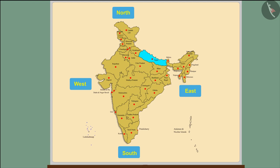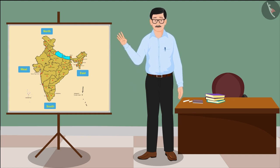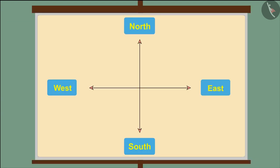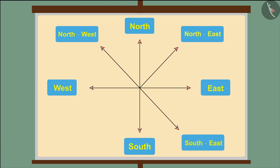There are four additional directions besides the main four. The direction in the middle of north and east is called north east. Similarly, the direction in the middle of north and west is called north west. The direction between south and east is called south east.